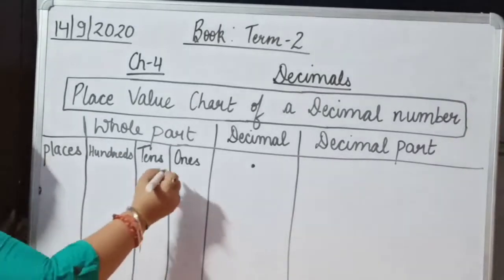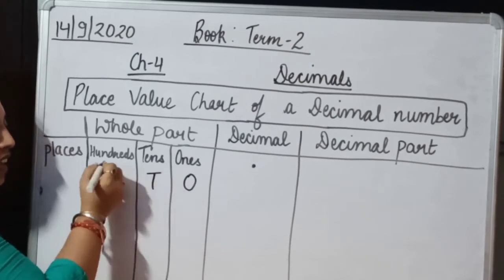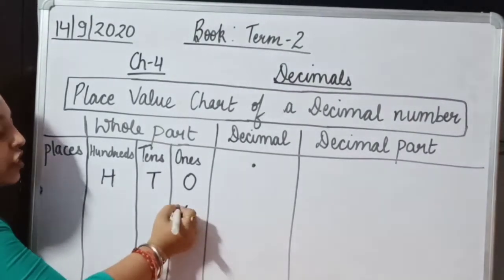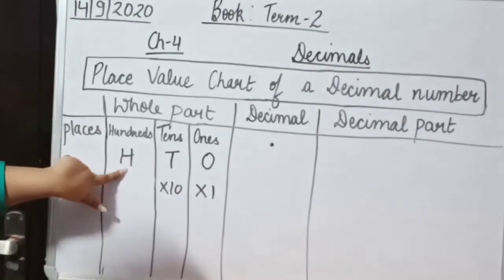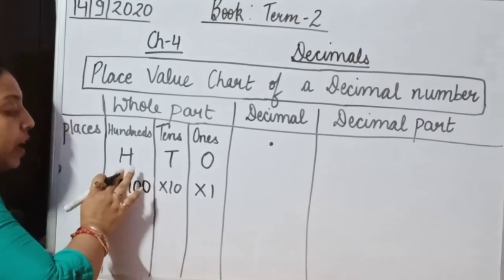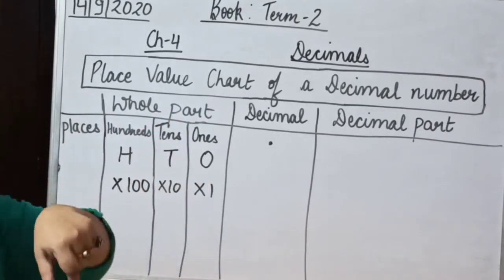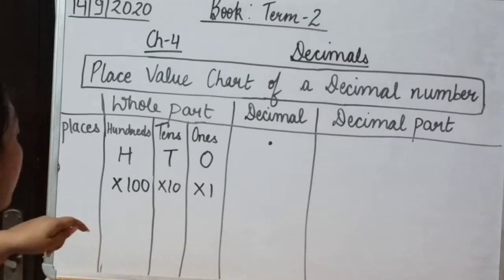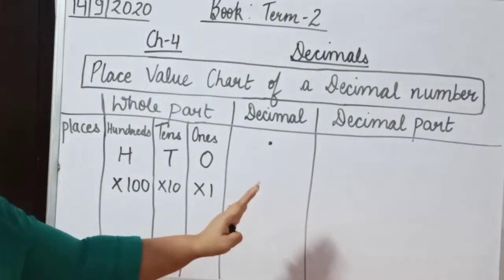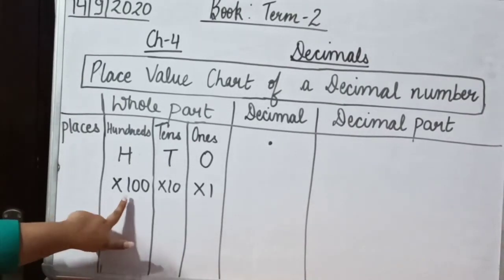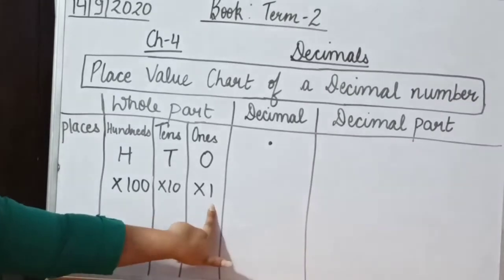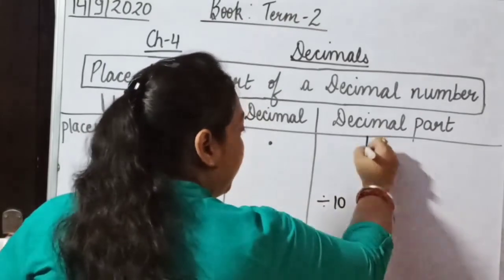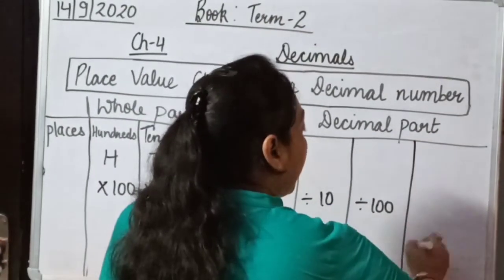Ones will be represented by O, tens by T, and hundreds by H. In ones we multiply the digit by 1, in tens we multiply by 10, and in hundreds we multiply by 100. Now, when we observe the table and move from left to right, at each step we are dividing by 10. So 100 divided by 10 is 10, and 10 divided by 10 is 1. Continuing this pattern, dividing 1 by 10 gives us the decimal part places — divide by 10, then divide by 100, then divide by 1000.